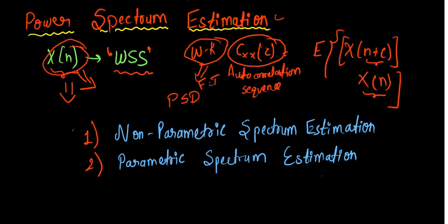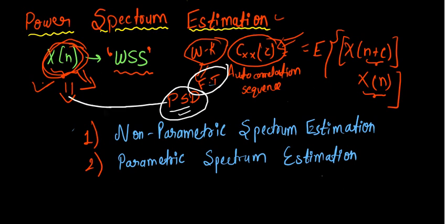So this will be our outline: firstly, for a given random process X(n), we will be finding its autocorrelation sequence by using this relation. After finding this autocorrelation sequence, we will take its Fourier transform and then we will get PSD, and PSD is nothing but our power spectrum estimation.